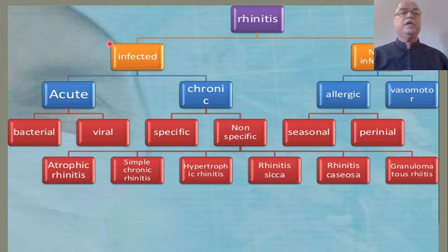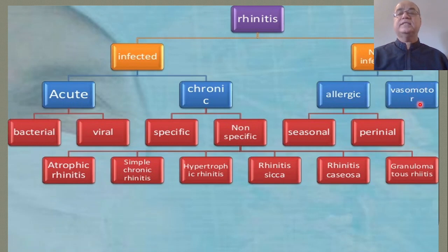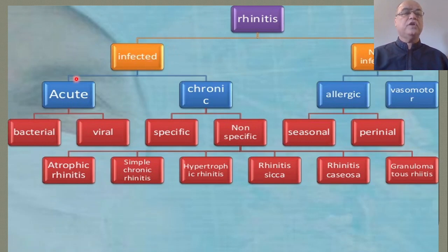If we go for the classification of rhinitis, it can be divided according to the etiology into an infective group and non-infective. The non-infective can be allergic and non-allergic, which we also call vasomotor rhinitis — that is non-allergic and non-infective rhinitis. As far as infective rhinitis is concerned, according to the duration of symptomatology, it can be divided into acute and chronic.